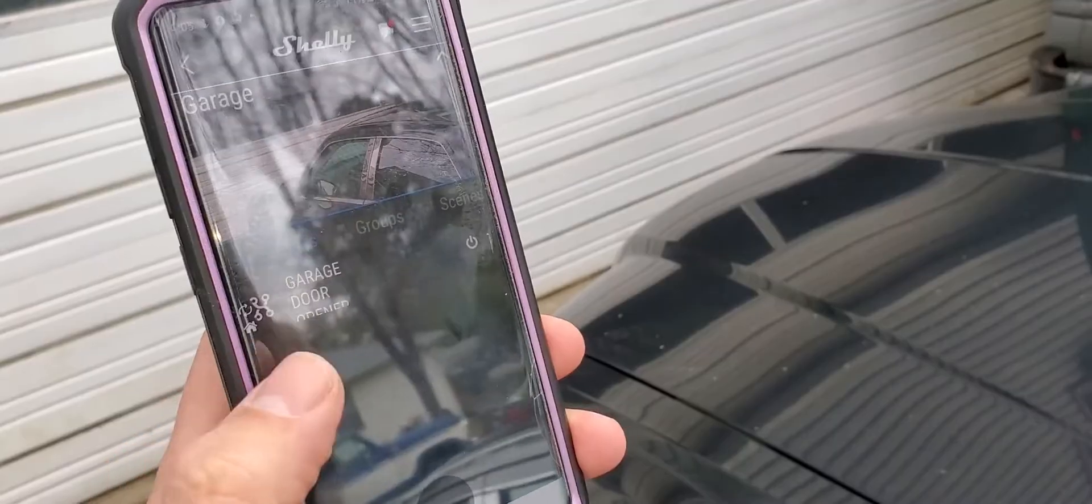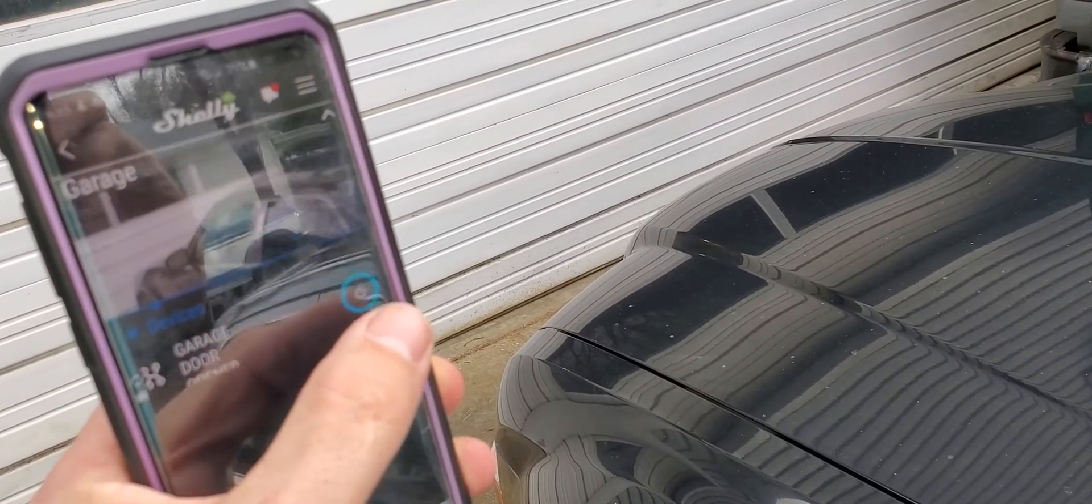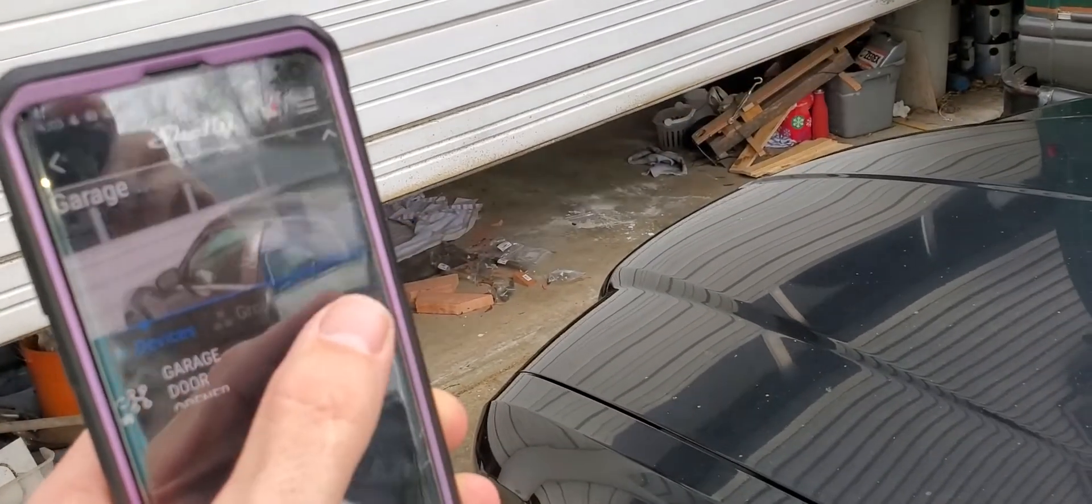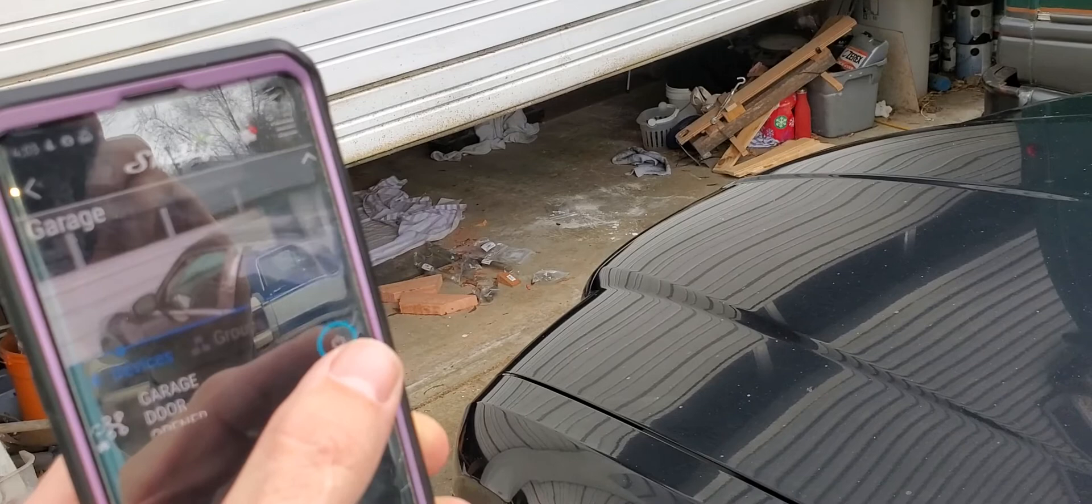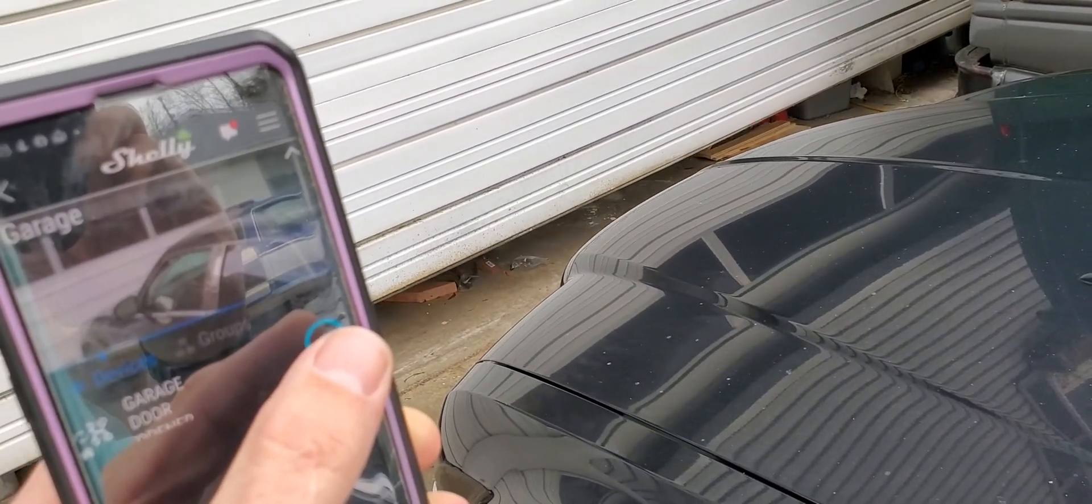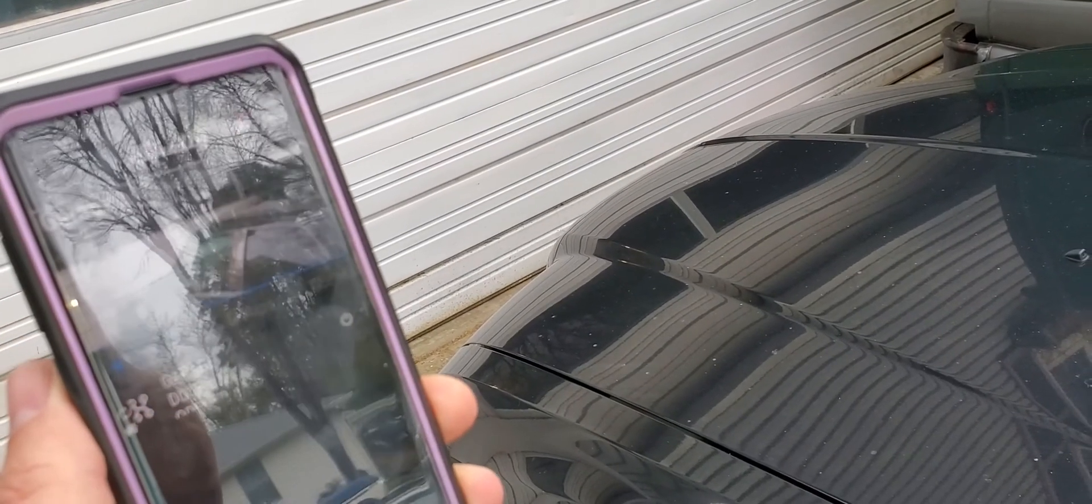The next step is to associate this new Shelly one relay with your Shelly app on your smartphone, or you can do this from a computer as well by using the HTTP commands. But as you can see, when I push the button, it either opens or closes the door. That's it for today.